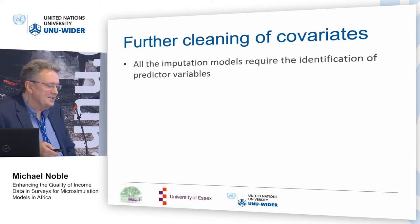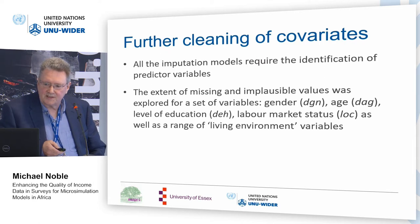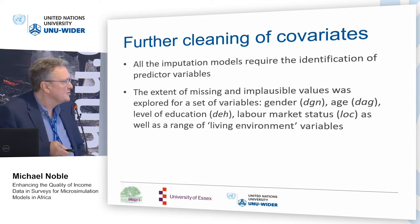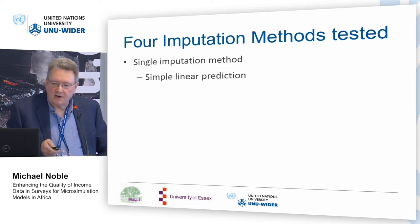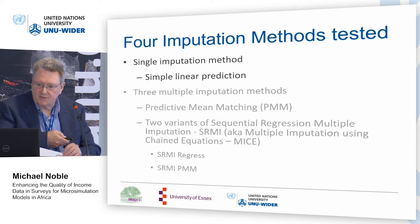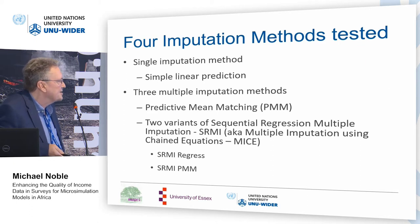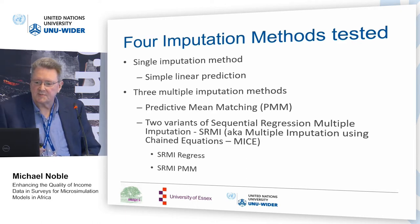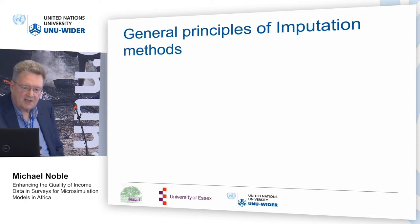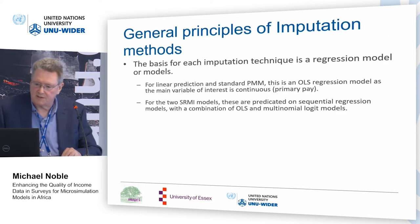There was also a need to do further cleaning of covariates — we wanted to get the covariates as clean as possible. That was fairly straightforward for things like gender and age, but not so easy for occupational class. We tested four imputation methods: simple linear prediction, and three multiple imputation methods — predictive mean matching (PMM), and two variants of sequential regression multiple imputation (SRMI), sometimes called MICE. The two SRMI variants were SRMI regress and SRMI PMM, a predictive mean matching variant.